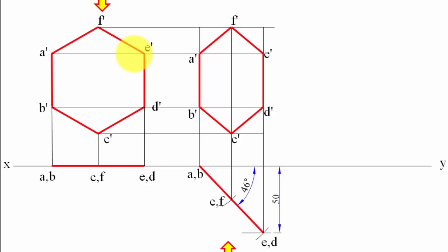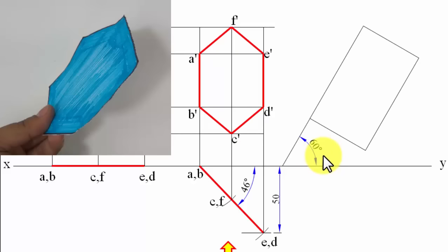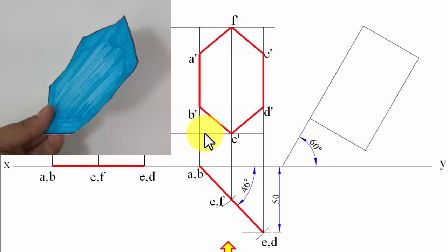In step three, edge A′B′ which is in the VP also makes 60 degrees with the horizontal plane. First, draw a 60-degree line and notice the hexagon from step two is inscribed inside a rectangle. Recreate that rectangle at 60 degrees along this line, then recreate the hexagon inside it. Use the compass to locate points C′, F′ by swinging arcs from their respective positions.